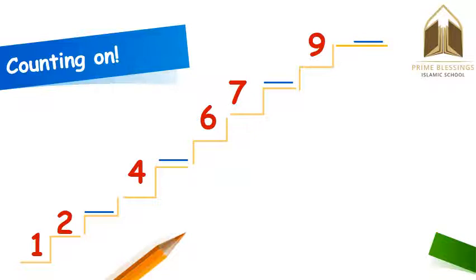Now let's count on and fill this ladder. One, two — which number should come after two? Three. Then four. After four, then five. If we count on after five: six, seven. Then? Yes, eight. Then nine is written already, and which number should come after nine? Ten. Good job.